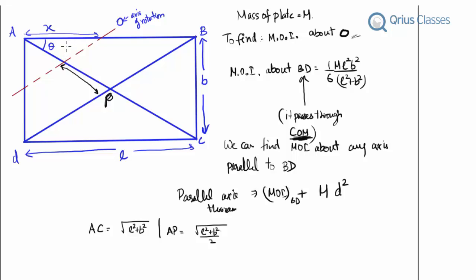If we draw a perpendicular to BD from A, it divides the segment into two equal halves of X/2 each, with the same angle θ. This length X/2 gives us AE = (X/2)·secθ, so AE = X·secθ/2.